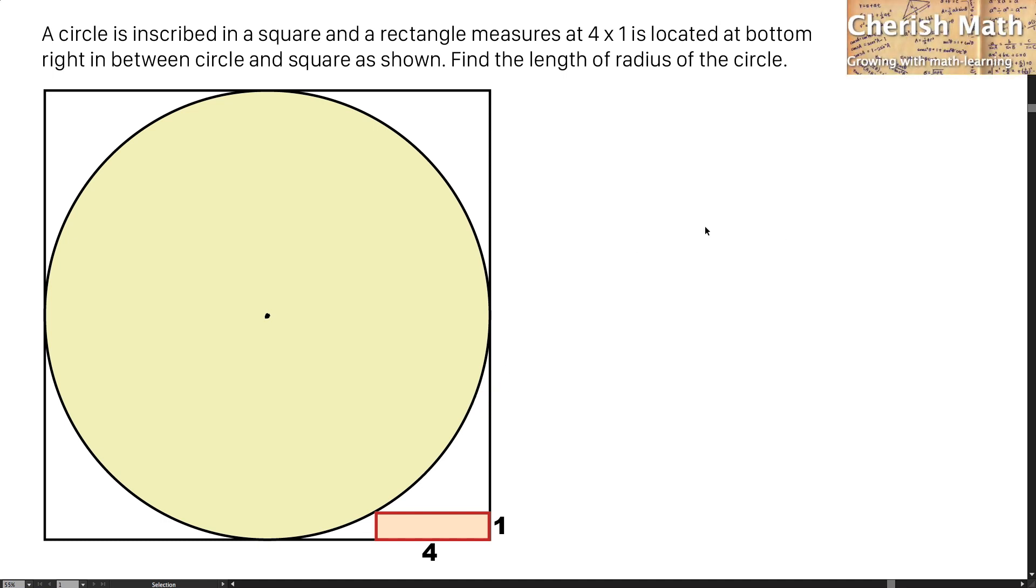Hi from Challenge Math. This is the question. A circle is inscribed in a square and a rectangle measuring 4 times 1 is located at bottom right in between circle and square as shown. Find the length of radius of the circle.